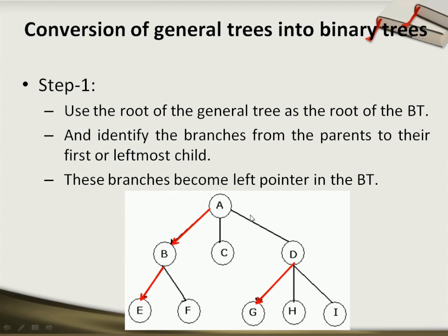So whenever such a general tree is in front of us, we'll first of all find out all the branches which are emerging from the root and going towards the leftmost child. Ultimately, from A to B, then B to E, and D to G. These are the different left pointers or left branches which we identify and mark first.